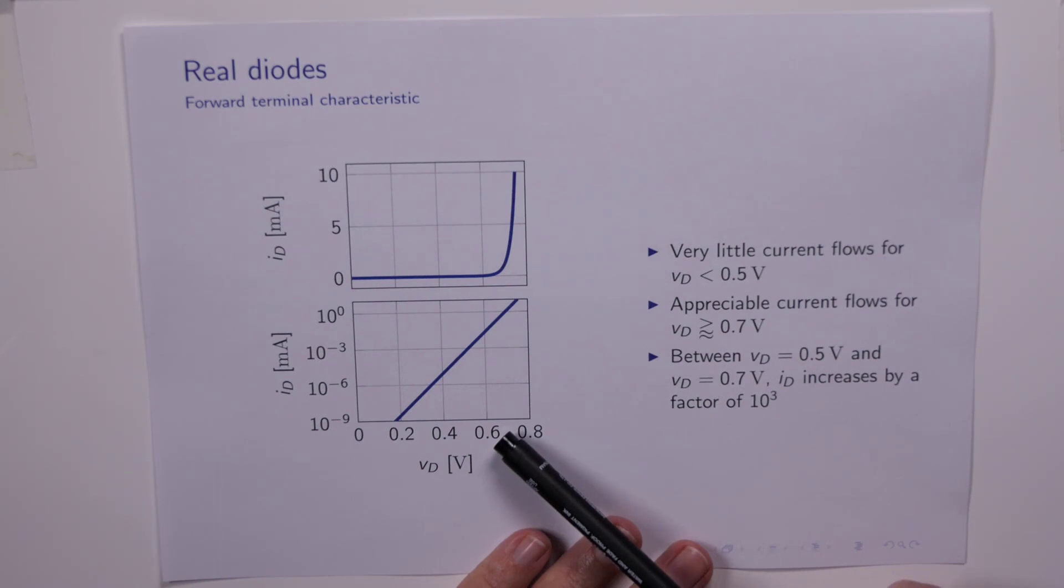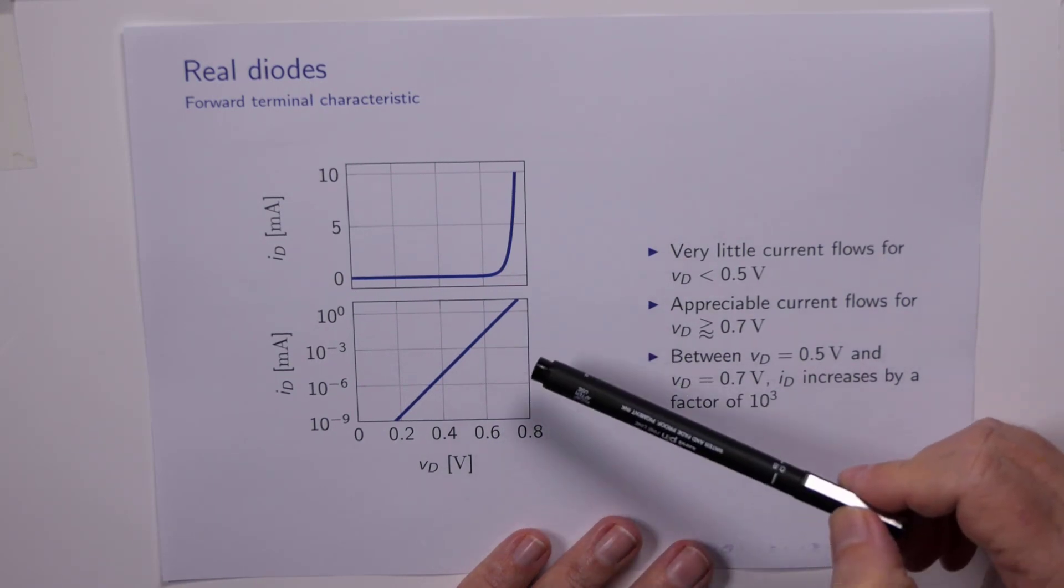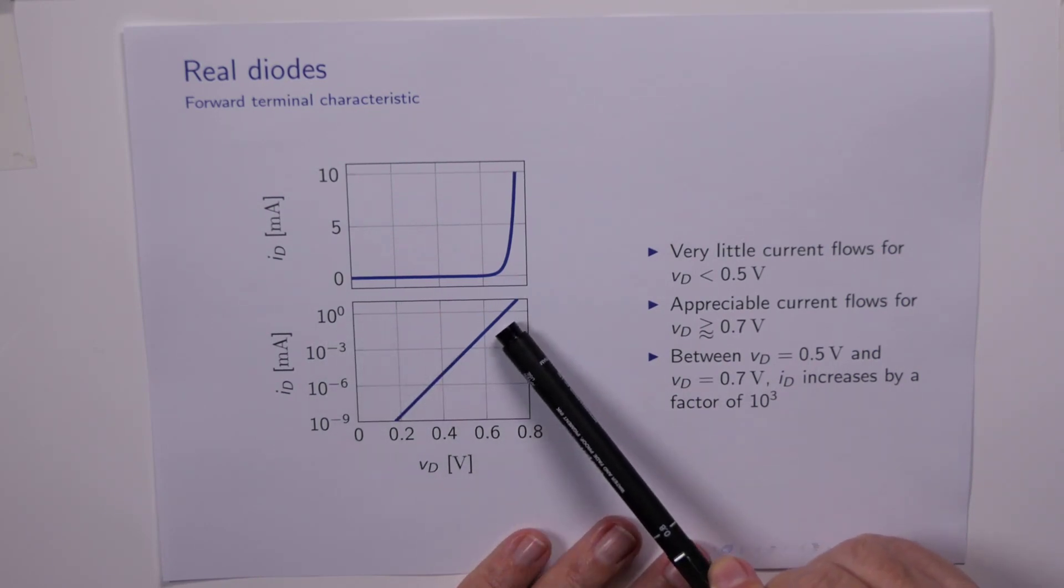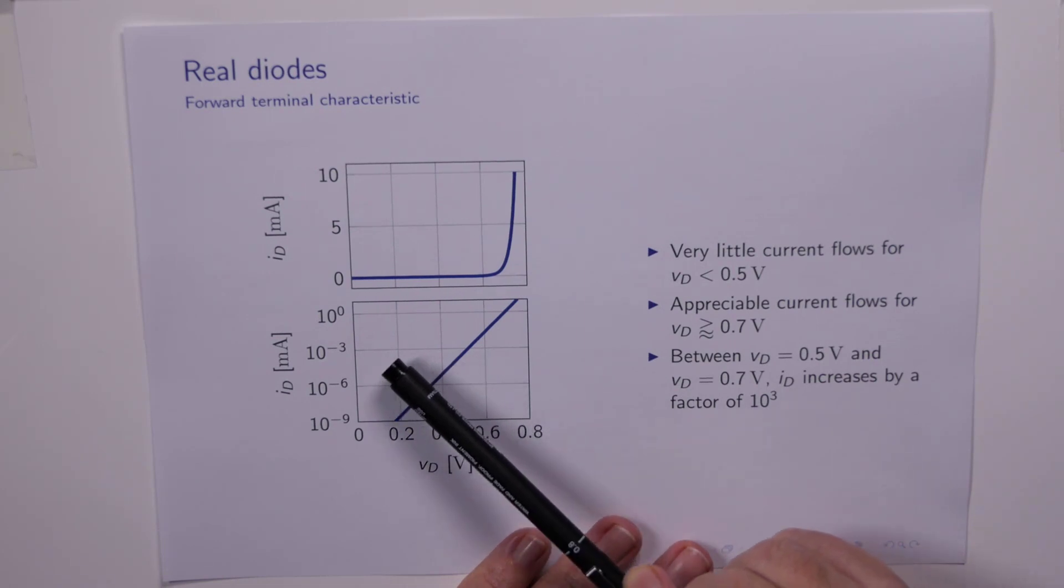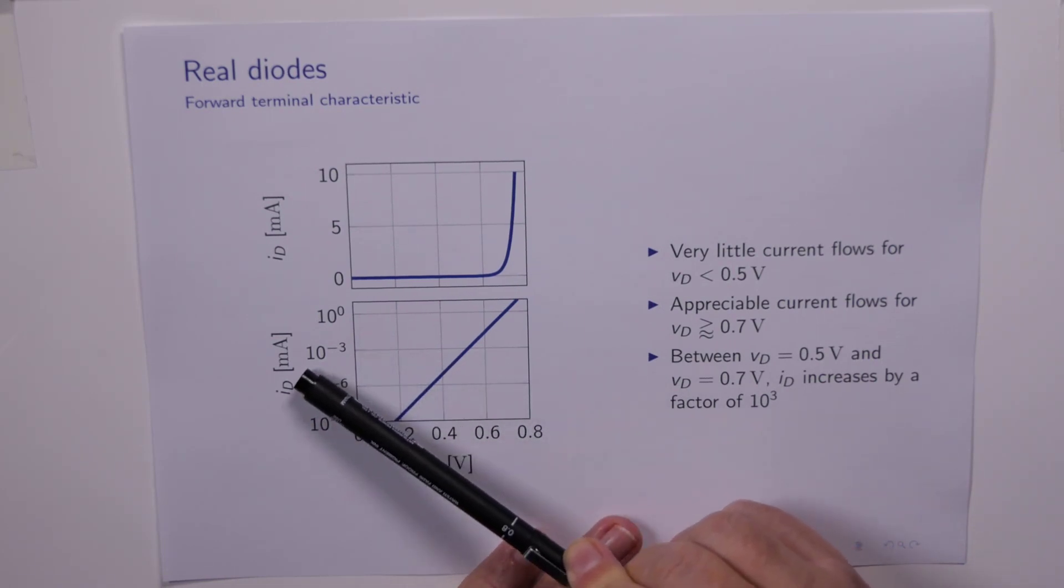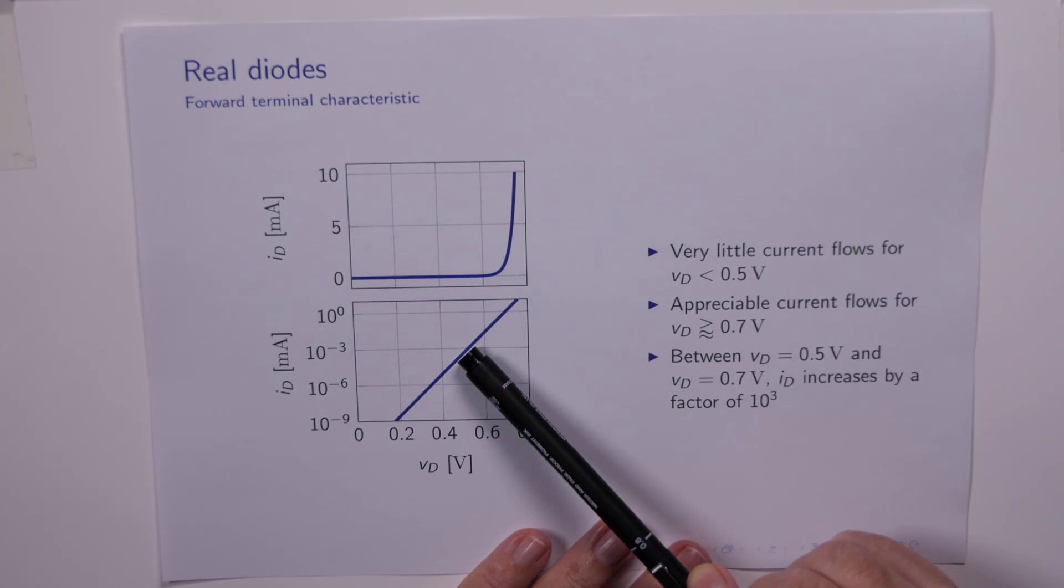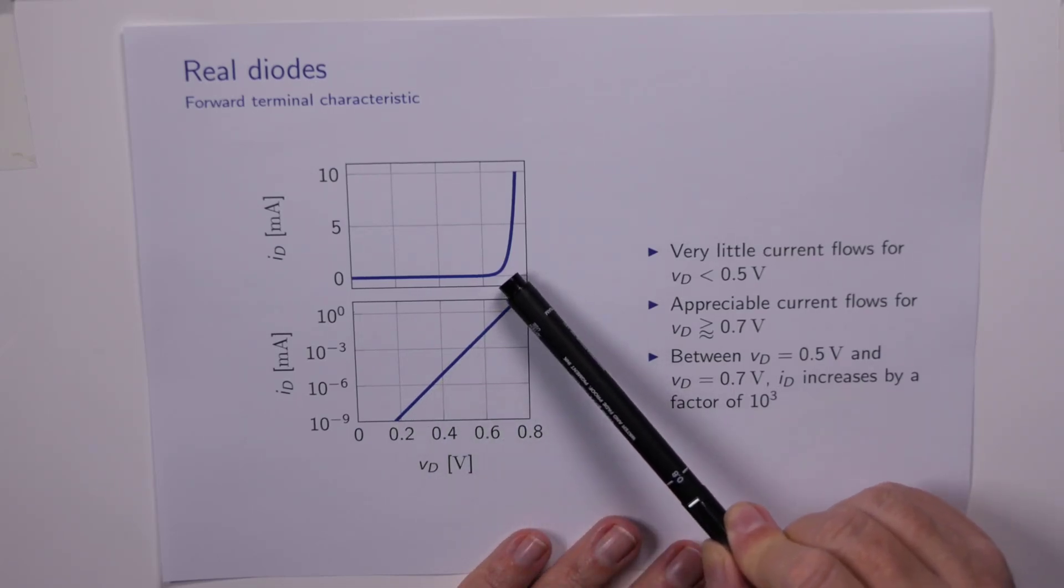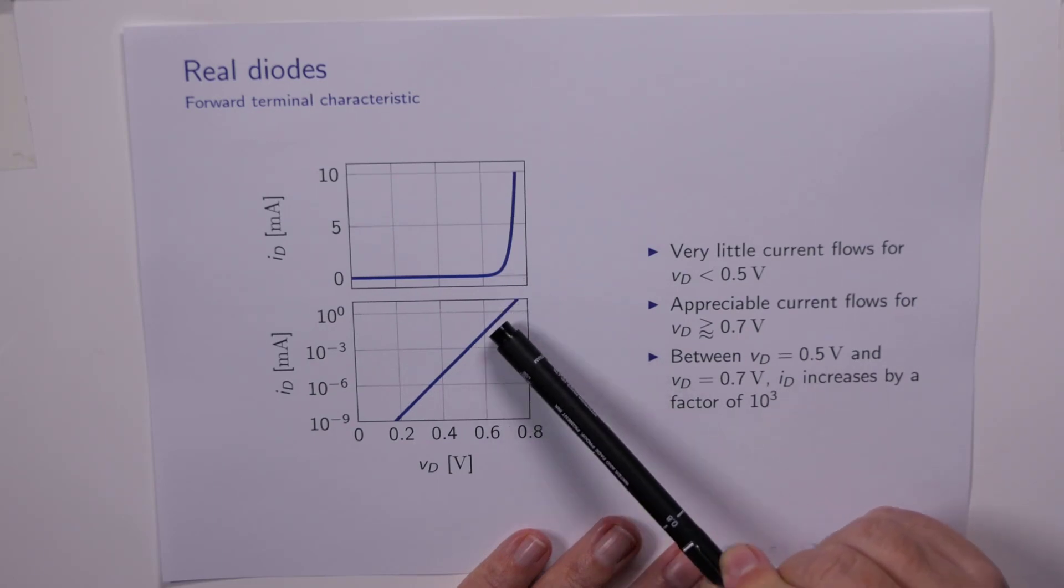Around about 0.7 of a volt we've got 10 to the 0 milliamps, so that's 1 milliamp. Down here at 0.5 of a volt we've got 10 to the minus 3 milliamps, that's 1 microamp. Down here somewhere between 0.3 and 0.4 volts we're down to 10 to the minus 6 milliamps, which is nanoamps. So the current is very small, and it's not until we get above about half a volt that we get any sort of current flow, and about 0.7 of a volt before we have appreciable current flow.